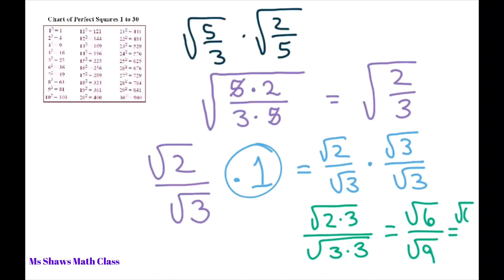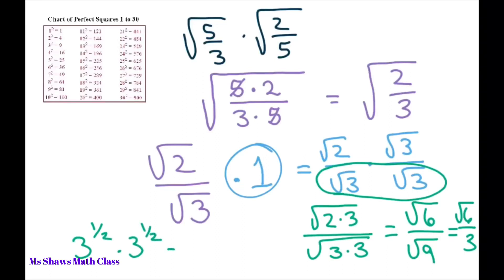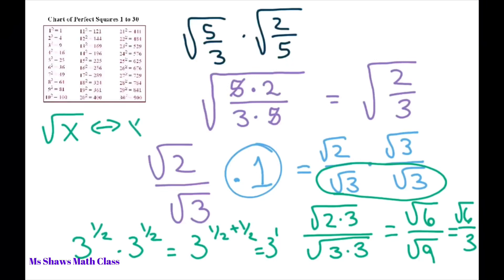That simplifies to square root of 6 over 3. This works because square root of 3 times square root of 3 equals 3 to the 1/2 times 3 to the 1/2, which is 3 to the first power — since square root of x can be written as x to the 1/2.